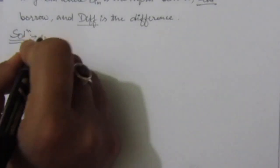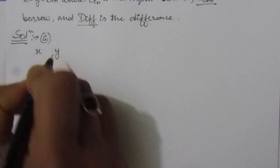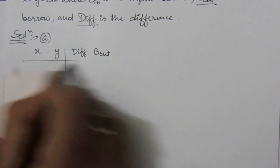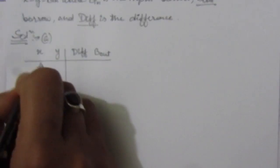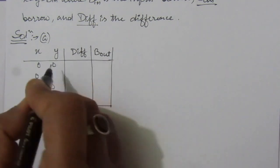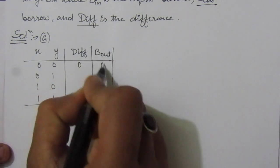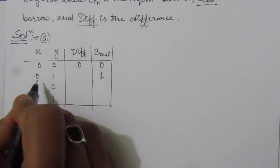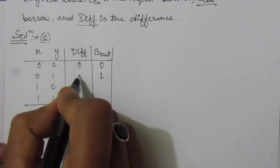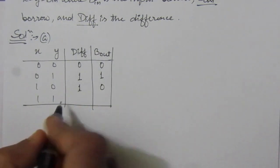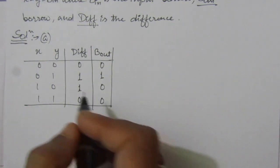For the first part, X and Y are the input variables, and DIFF and B_out are the two output variables. For two input variables we have four combinations: 00, 01, 10, 11. For X minus Y: zero minus zero gives difference 0, borrow 0; zero minus one requires a borrow so difference is 1, borrow is 1; one minus zero gives difference 1, borrow 0; one minus one gives difference 0, borrow 0.